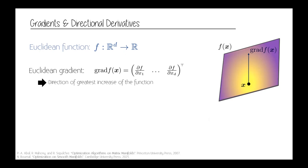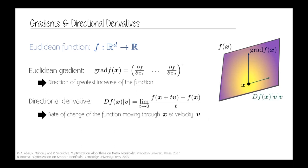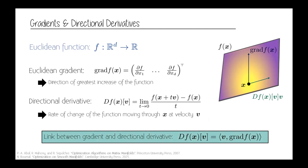Another important notion is the directional derivative, which gives you the rate of change of the function when you start at x and move in a direction v — you can think of v as a velocity. There is an important link between the directional derivative and the gradient: you can always obtain the directional derivative by computing the inner product between your direction and your gradient. This is crucial for generalizing gradients to Riemannian manifolds.